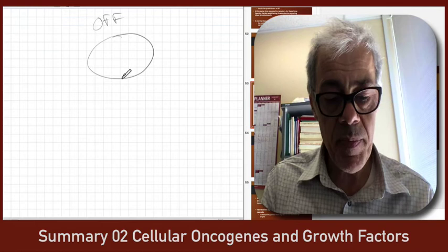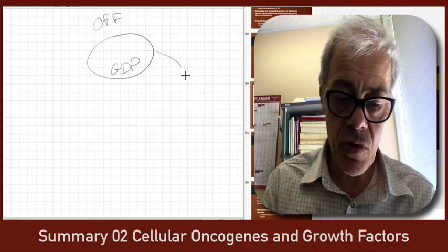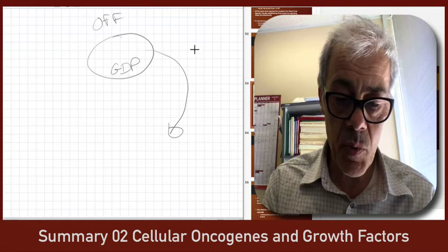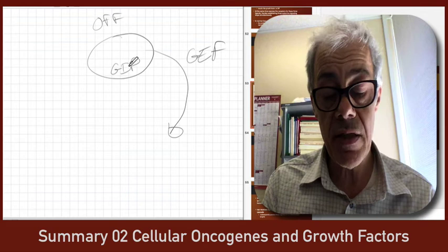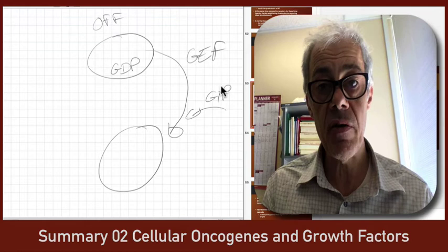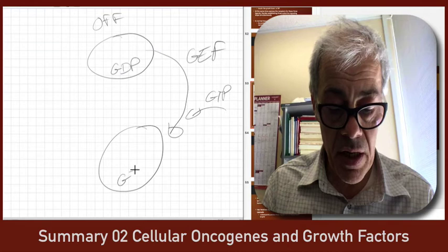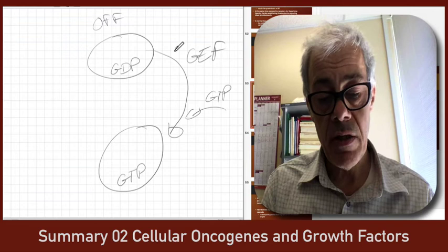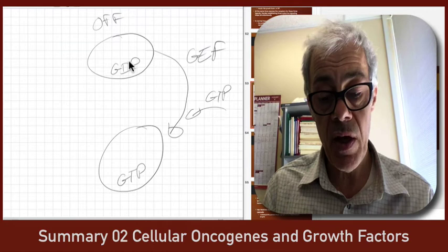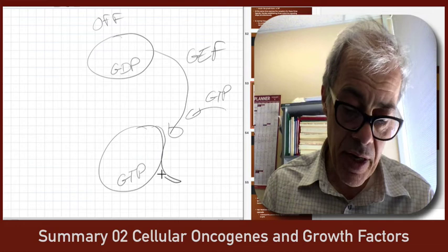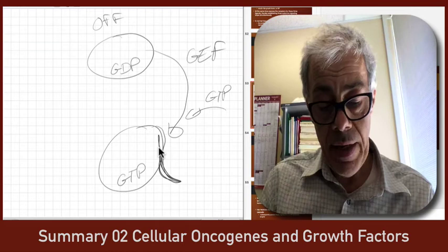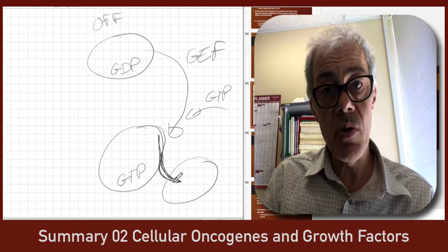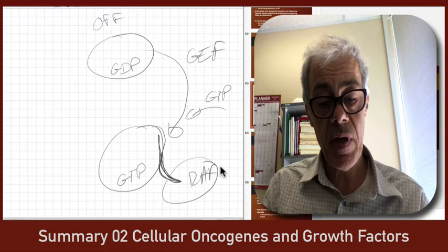RAS is in the off state when it's bound to a GDP molecule. During normal cellular growth, a guanine exchange factor is able to displace the GDP and allow GTP — which is present at a higher concentration in the cells — to occupy that space where the GDP was. So the guanine exchange factor dislodges the GDP, leaving an empty pocket where GTP can then populate. This causes part of the molecule to have a different structure — a switching loop is now exposed — which can then activate other proteins that bind to and recognize the new structure, such as RAF.